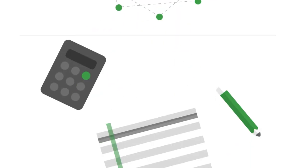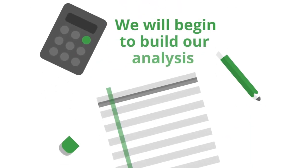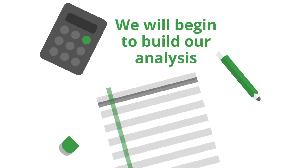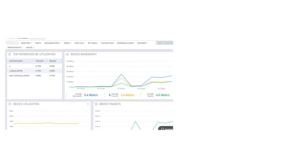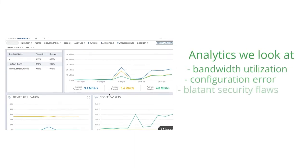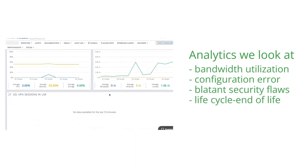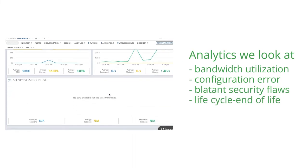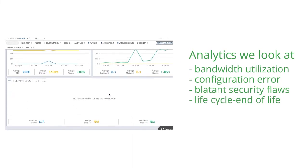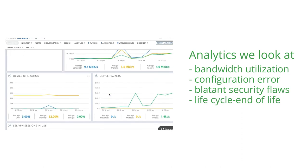Once we have the map of your network, our team begins to build our analysis. Some of the standard analytics we look at are bandwidth utilization, configuration errors, blatant security flaws, lifecycle, end-of-life or nearing-end-of-life devices, and things that don't have an open support contract.